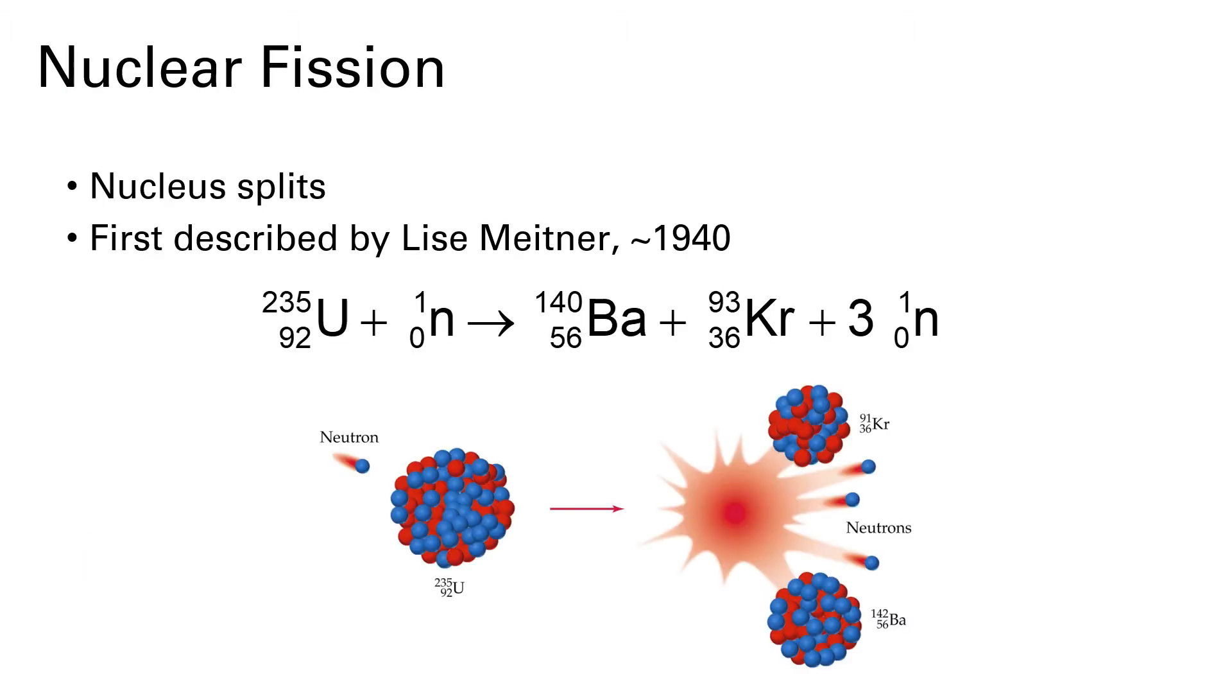The word fission just means to split. So nuclear fission occurs anytime a nucleus splits. This was first described by Lise Meitner around 1940. As an example, we have a uranium isotope being bombarded by a neutron and that causes the uranium isotope to split and we get a barium isotope plus a krypton and three neutrons.